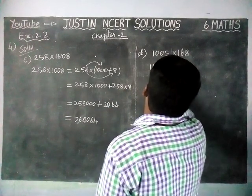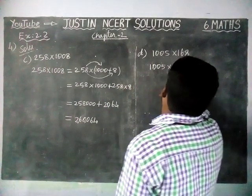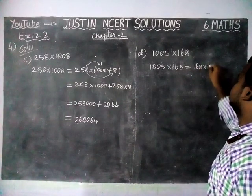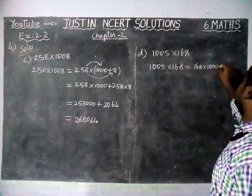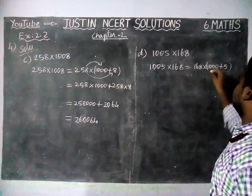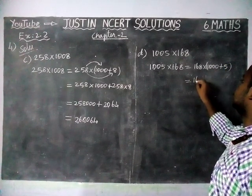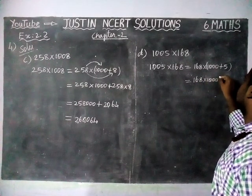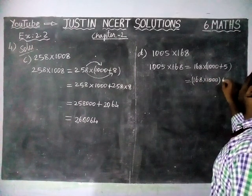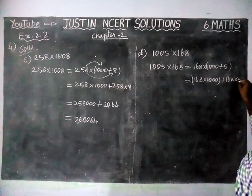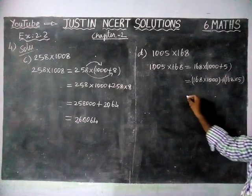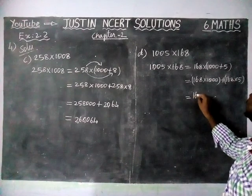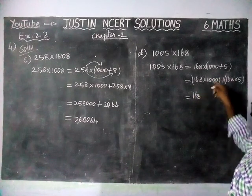Now Option D: 1005 into 168 is equal to — we are going to separate this. 168 into 1000 plus 5 is equal to 168 into 1000 plus 168 into 5. Now we are going to find the answer. 168 into 1 gives the same answer with 3 zeros.